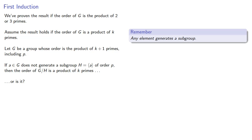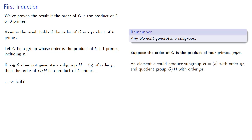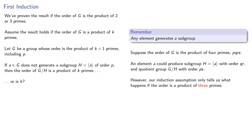Let's think about this. Suppose the order of g is the product of four primes: p, q, r, s. An element A could produce a subgroup h with order q, r, and quotient group g mod h with order p, s. However, our induction assumption only tells us what happens if the order is a product of three primes. It doesn't tell us what happens in these two cases.